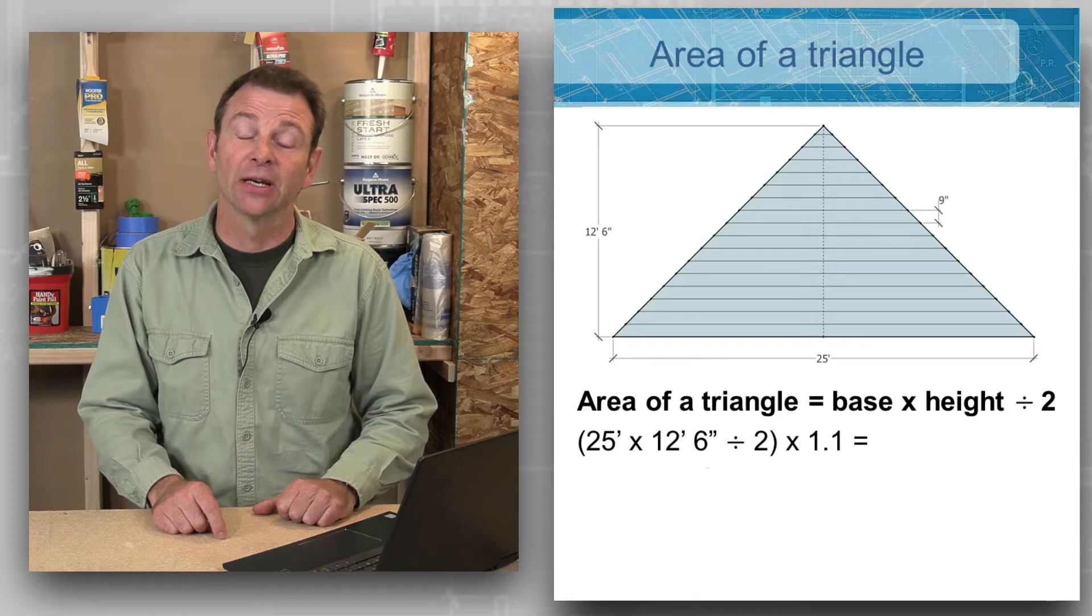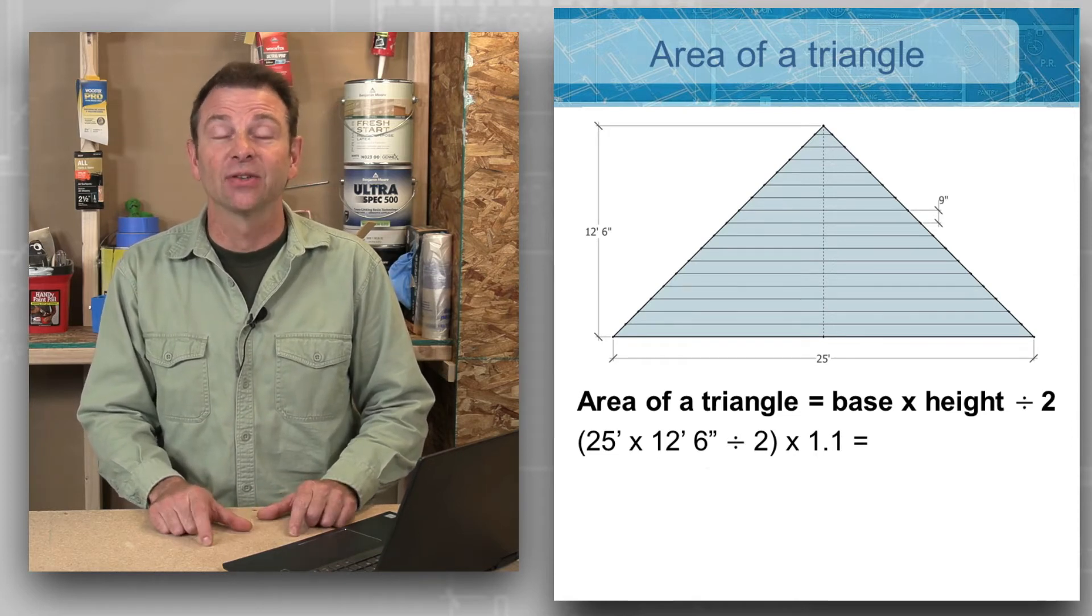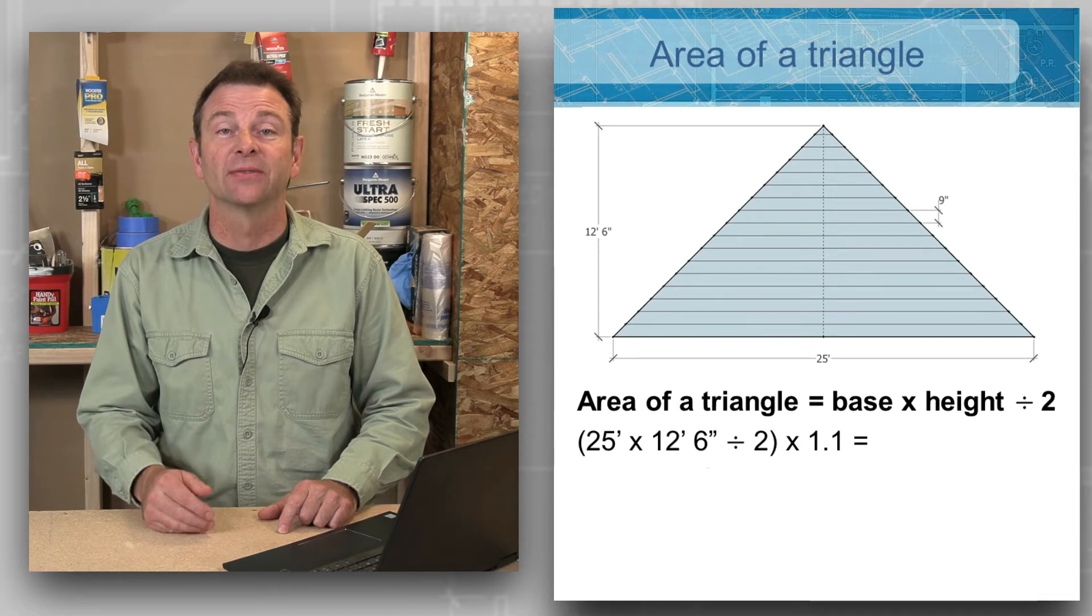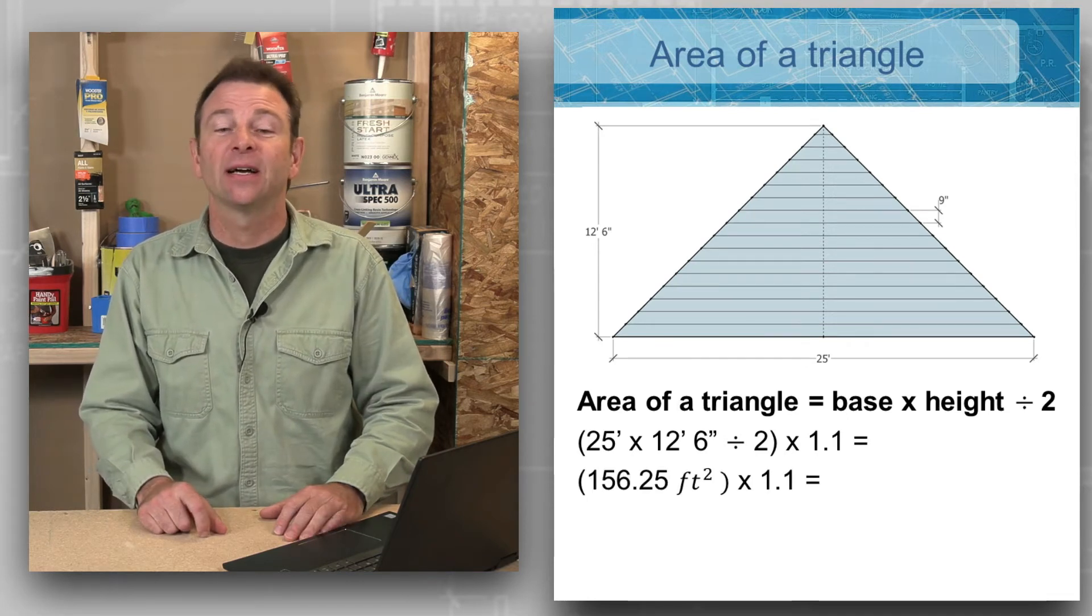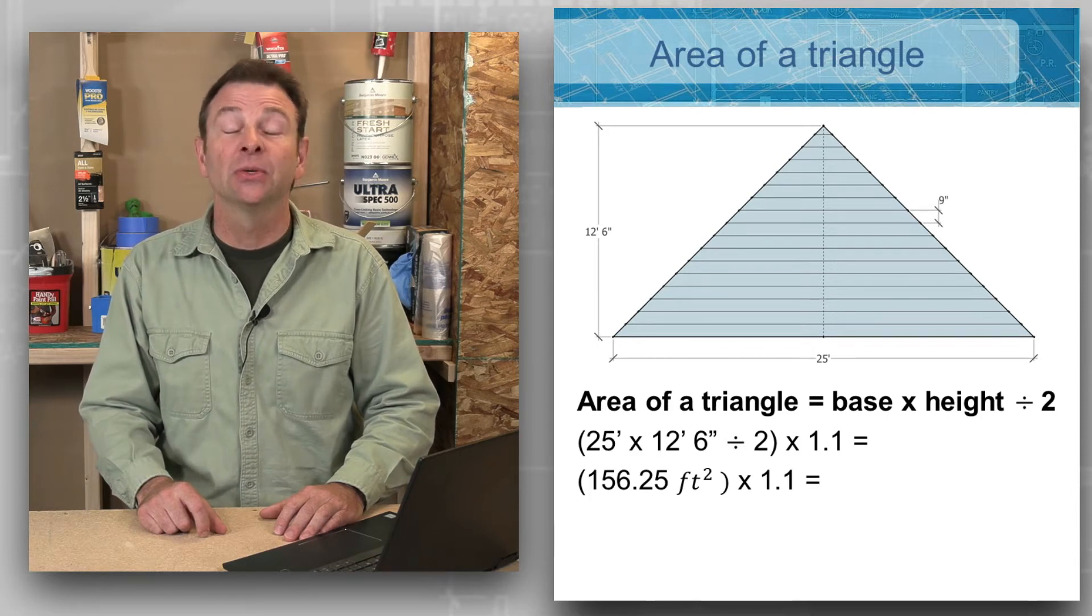Our 25 feet times our 12 foot 6 divided by 2 is going to be 156.25 square feet.